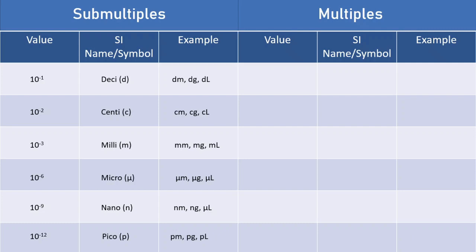Those were submultiples — all fractions of the base unit. But we can also go the other way to get larger values, and these are what we refer to as multiples of the SI unit. The first multiple has the prefix deca, which is 10 times the size of the base SI unit — so a decameter is 10 meters, a decagram is 10 grams. Then we have hecto, which is 100 times the size — a hectometer is 100 meters, hectogram is 100 grams, and so on.